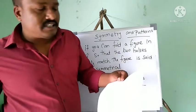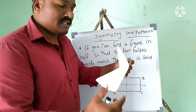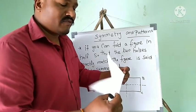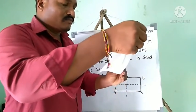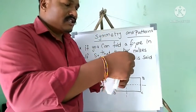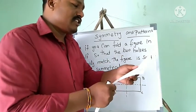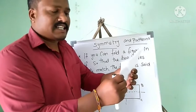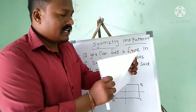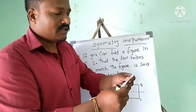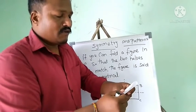Now if you take a square-shaped paper, you can fold it one way — that is the first line of symmetry. Then fold it another way — that is the second line. Then fold it diagonally — third line. Then the other diagonal — fourth line.